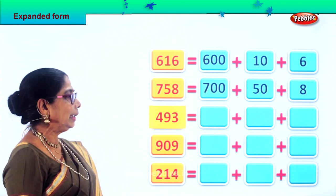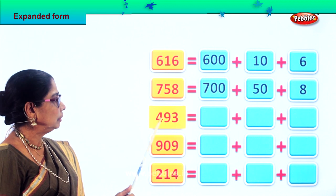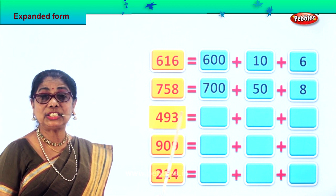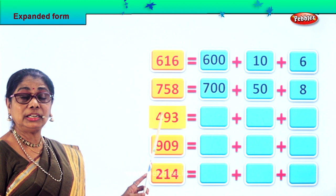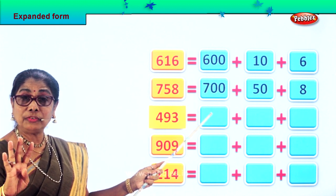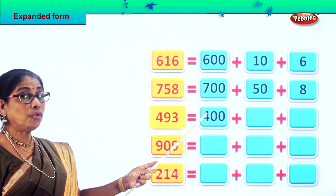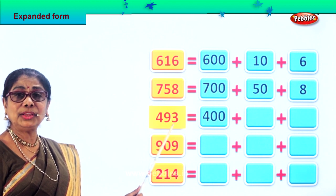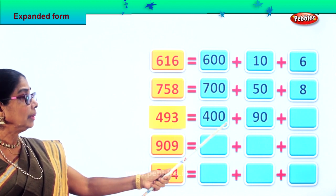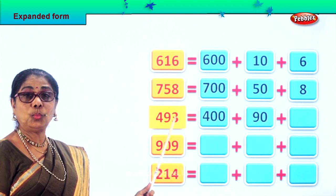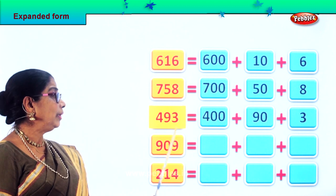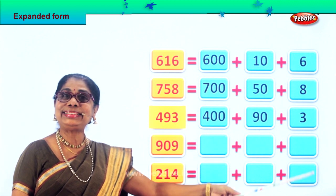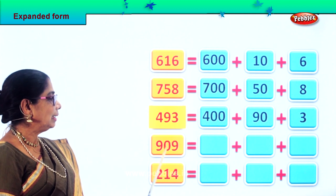Next we have three in the ones place, nine in the tens place, four in the hundreds place. How many hundreds? Four — that is four hundred. Plus nine tens, which is ninety. Plus three ones. So 493 is expanded as four hundred plus ninety plus three. Four hundred and ninety-three. Did you enjoy?